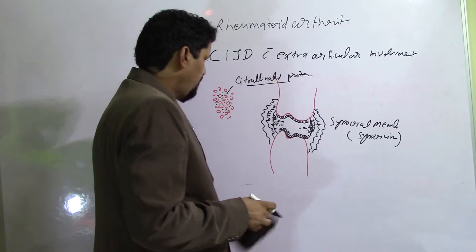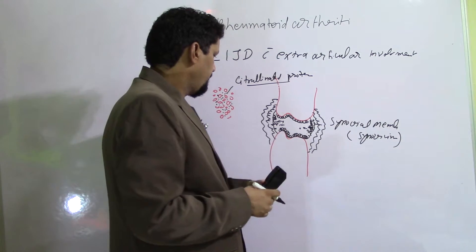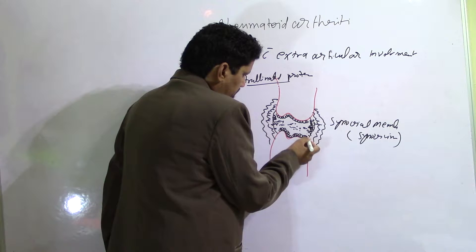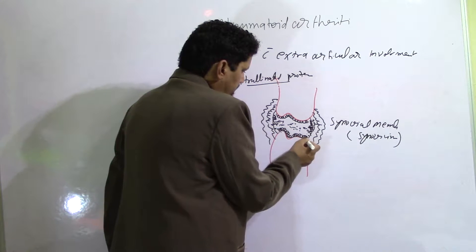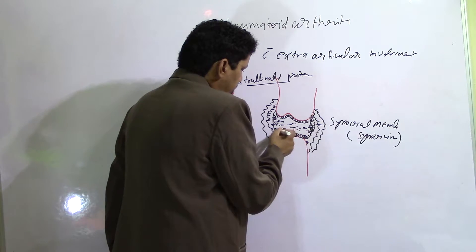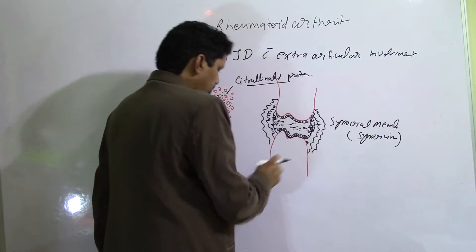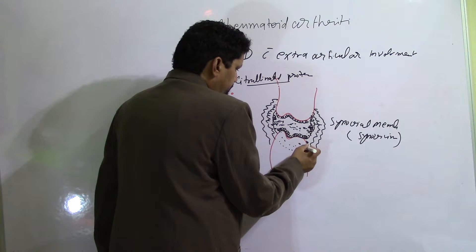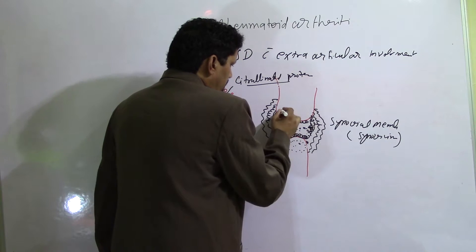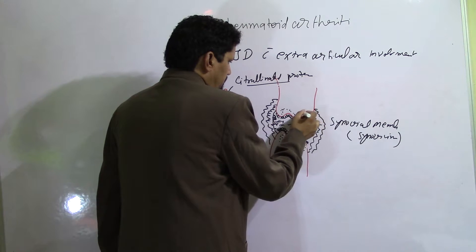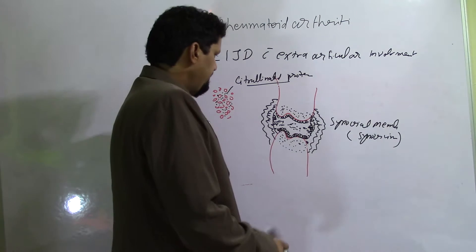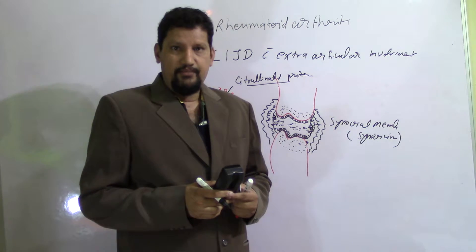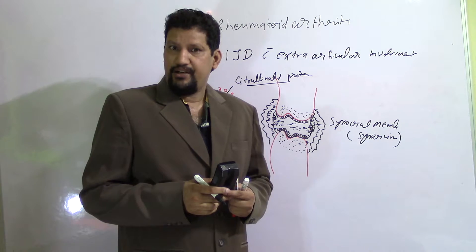With reduced synovial fluid, the lubricating action decreases, leading to cartilage erosion and ultimately destruction of bone ends. These factors cause juxtaarticular osteoporosis — demineralization of the articular parts of the bones — initially driven by the disease itself and secondarily by medications used in treatment.